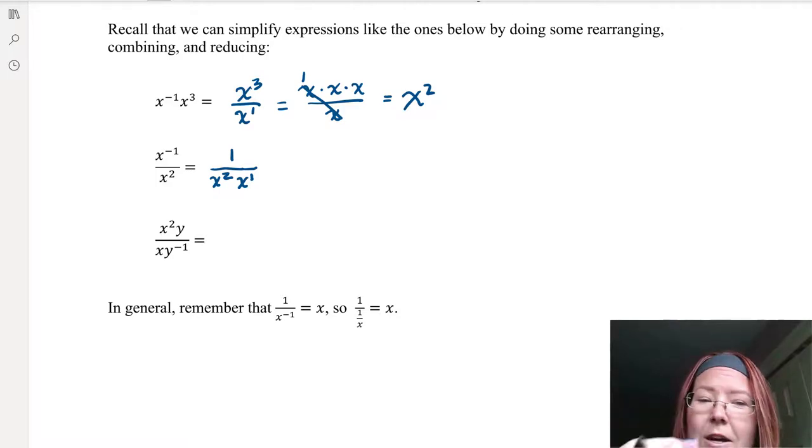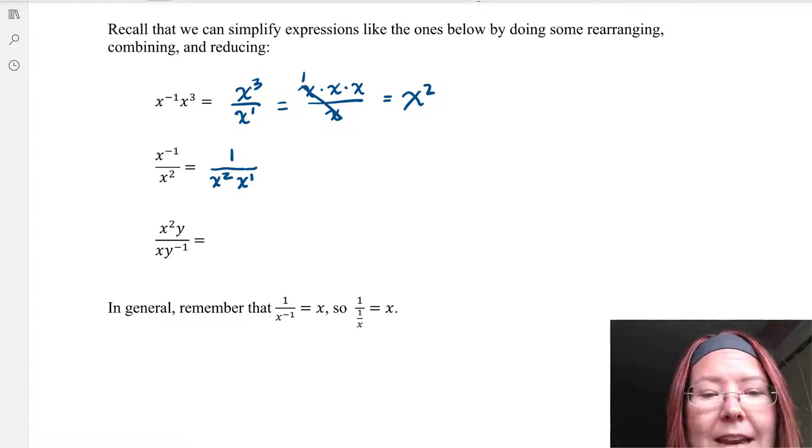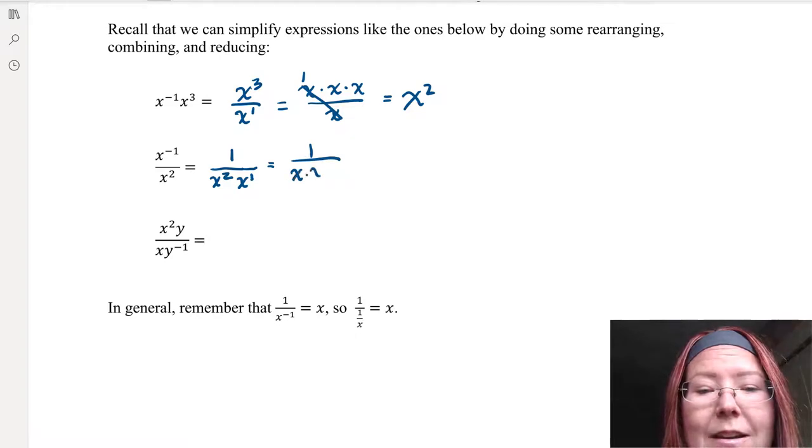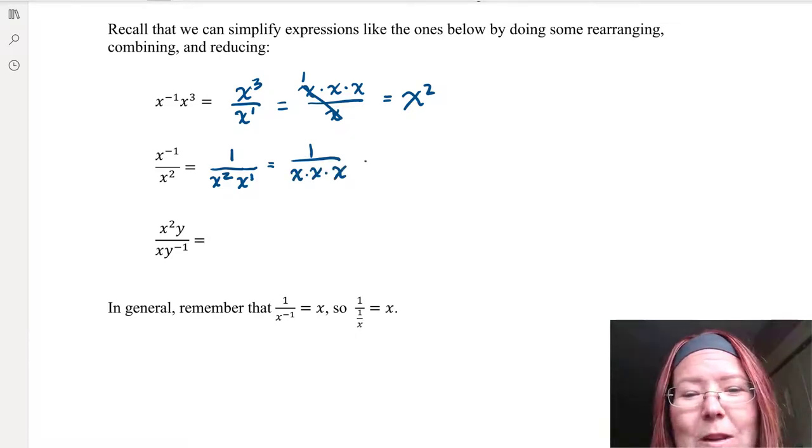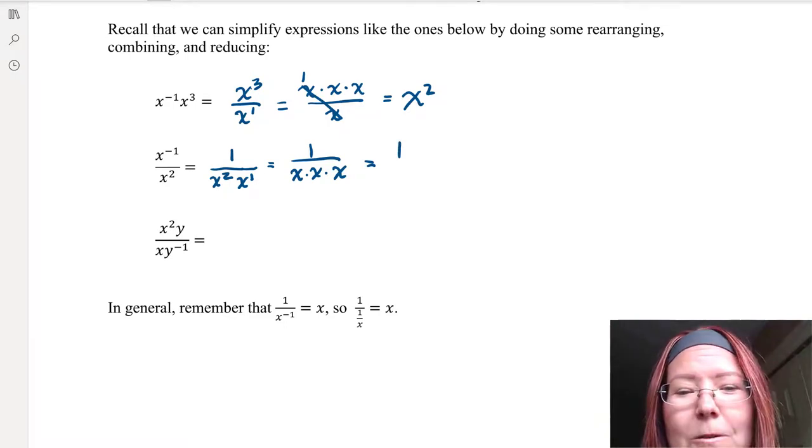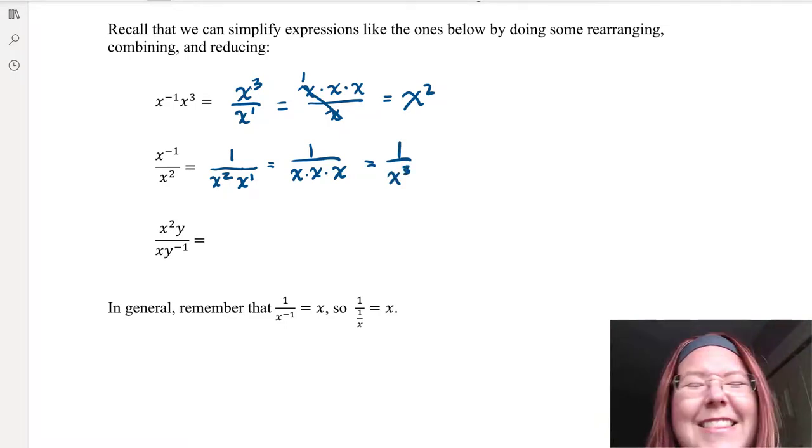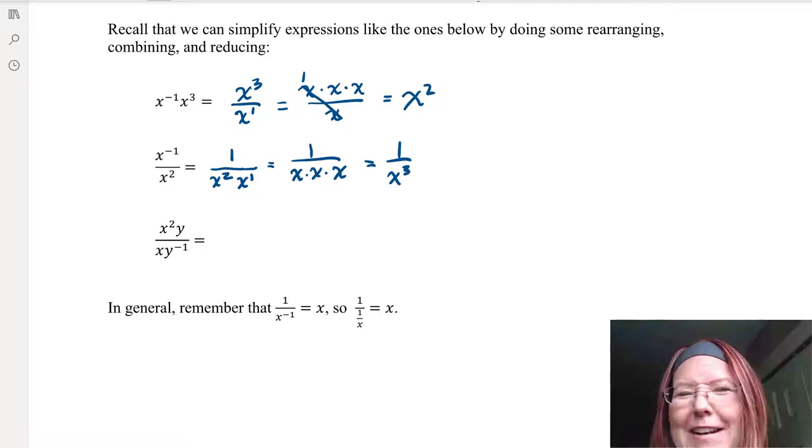Now we have one over x squared times x to the first. When we put that together, that's like one over x times x, and then there's another x from the x to the first. So now we have one over x times x times x, or one over x cubed. This may seem like a lot of extra work right now, but I am trying to make a point that you'll see as we move into trig functions.